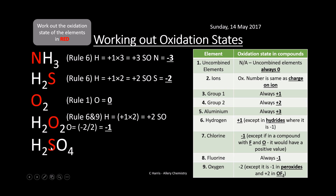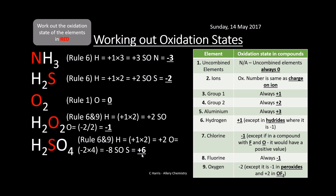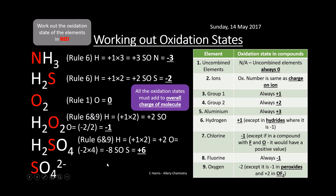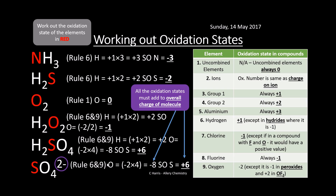In H₂SO₄, oxygen is minus two and there are four of them giving minus eight; hydrogen is plus one with two of them giving plus two; so sulfur must be plus six for everything to balance. For SO₄²⁻, oxygen is minus two with four of them giving minus eight, but the overall charge is minus two. All the oxidation states must add up to the overall charge of the ion, so sulfur is plus six because minus eight plus six equals minus two.